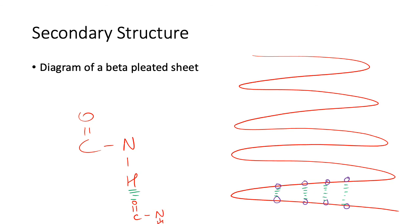So those are the secondary structures: alpha helices and beta pleated sheets. Do not forget the word 'pleated' — if you just say 'beta sheets,' it's wrong. That's it.